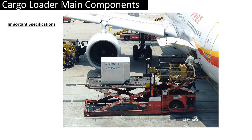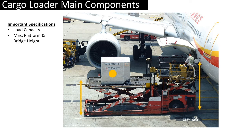The main specifications of a cargo loader are straightforward. Load capacity tells how many ULDs can be loaded over the platform at once. The higher the capacity the better, because the platform will not have to be raised and lowered again and again if it is able to carry more ULDs all at once, saving time.